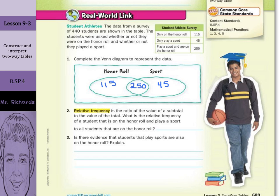Well, our total, 115 plus 250 plus 45, is 365. And the student that's on an honor roll and plays a sport was 250. So our relative frequency can be written 250 over the total, 365.